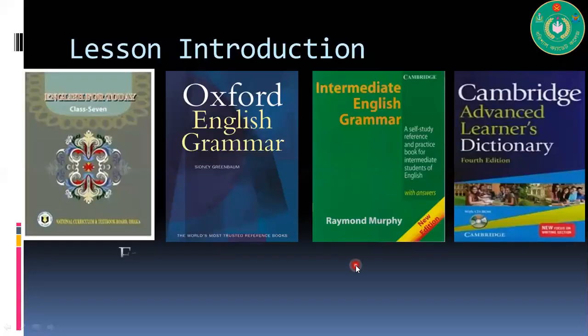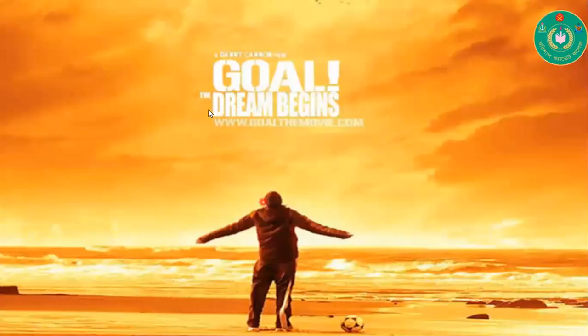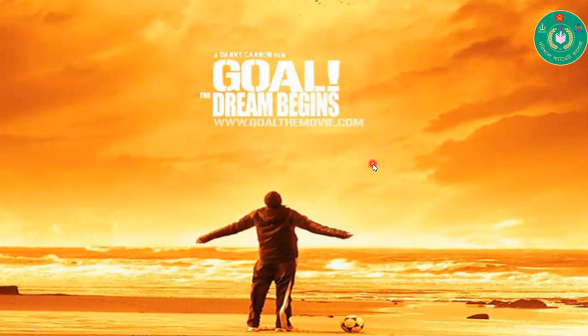This is your English First Paper class and today's unit is Games and Sports — Unit Seven. I have tried to cover lessons one, two, and three. What can you understand from this picture? Yes, this session is going to be about games and sports.